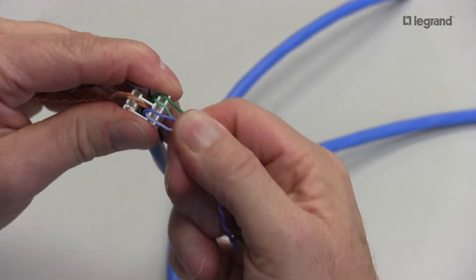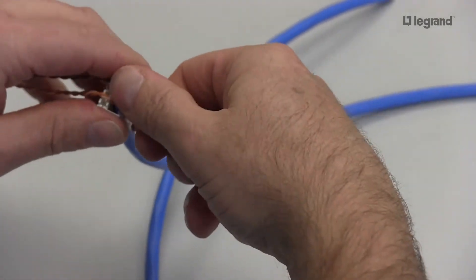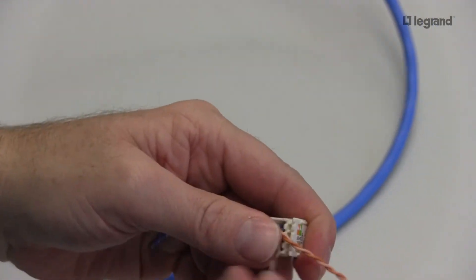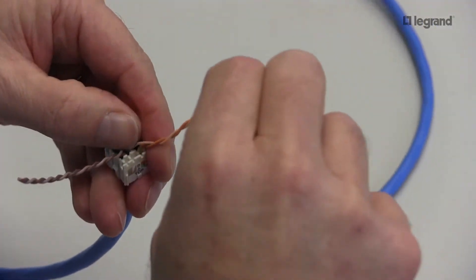Split my white-blue and blue-white. It's always nice to pull my pairs straight out. It just helps when I trim my conductors after. And I'll take my orange and do the same.